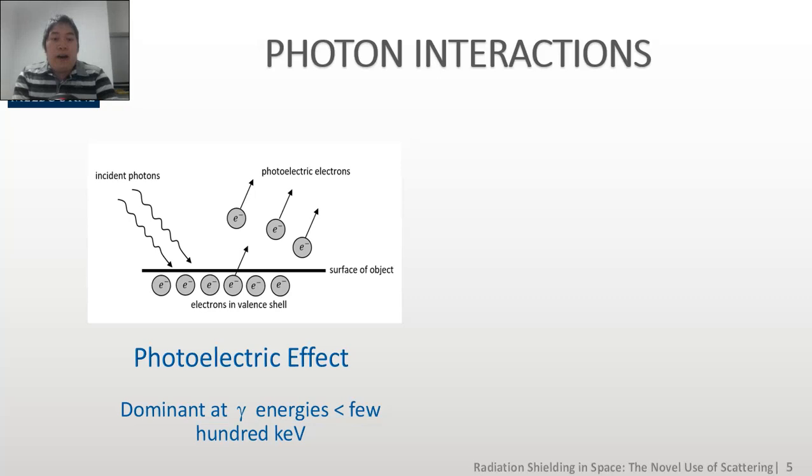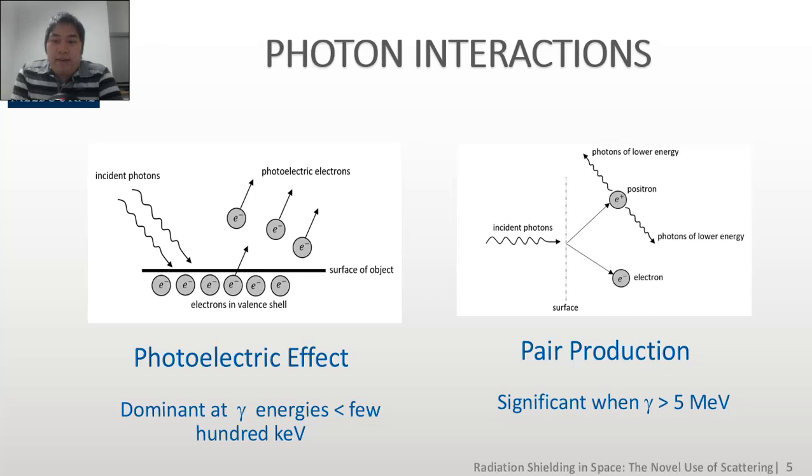First, let's explore the different photon interactions that exist. First, we have the photoelectric effect when incident photons strike the surface of an object and then causes the release of photoelectrons in the outer valence shell of the atom. Typically, the energy of those incident photons will be in the range of gamma rays, which is only a few hundred kiloelectron volts.